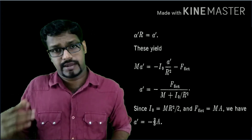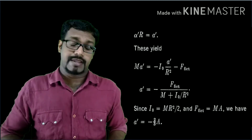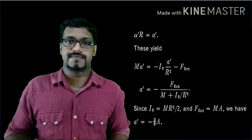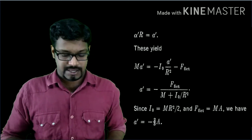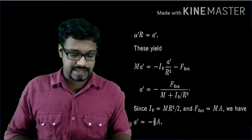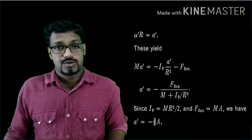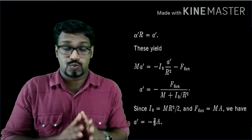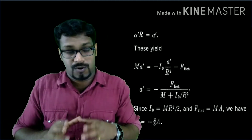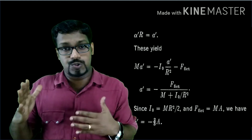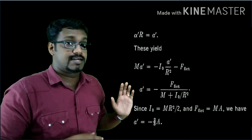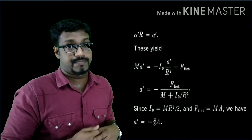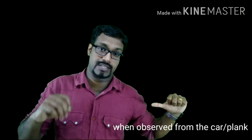The fictitious force is M times capital A, and the moment of inertia of a cylinder is I₀ equals M R squared divided by 2. Substituting these values, you get A' equals minus 2/3 times A. This means the acceleration of the cylinder, when observed from the frame attached to the plank moving with acceleration A, is equal to minus 2/3 capital A. So if the plank moves in one direction with acceleration A, the cylinder moves in the opposite direction with acceleration equal to 2/3 of the plank's acceleration.